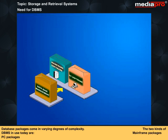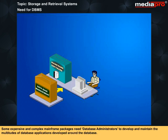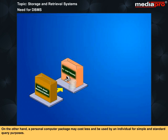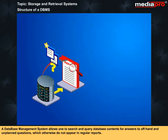Database packages come in varying degrees of complexity. The two kinds of DBMS in use today are mainframe packages and PC packages. Some expensive and complex mainframe packages need database administrators to develop and maintain the multitudes of database applications. On the other hand, a personal computer package may cost less and be used by an individual for simple and standard query purposes. A database management system allows one to search and query database contents for answers to offhand and unplanned questions which otherwise do not appear in regular reports.